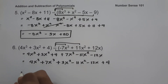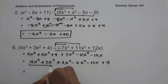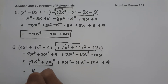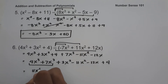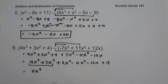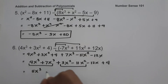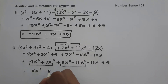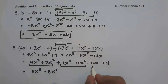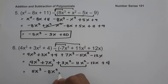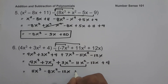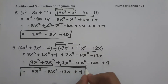So let us combine like terms: 4x cubed plus 7x cubed is 11x cubed, and 3x squared minus 11x squared is negative 8x squared, and then negative 12x plus 4. This will be our answer.